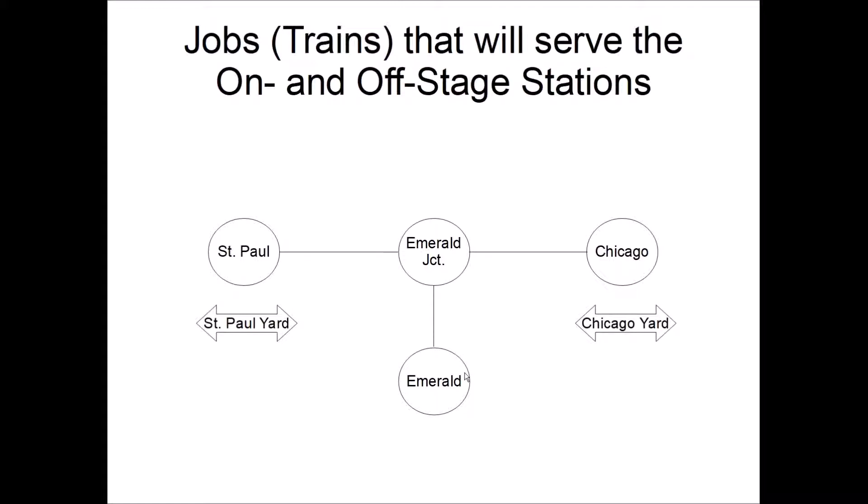You see that we need yard jobs both in Chicago and St. Paul in order to move cars between customers and the yard. Once the cars are in the yard, we'll have a westbound manifest freight that takes them from Chicago to St. Paul for the westbounds, drops off, and picks up at Emerald Junction.